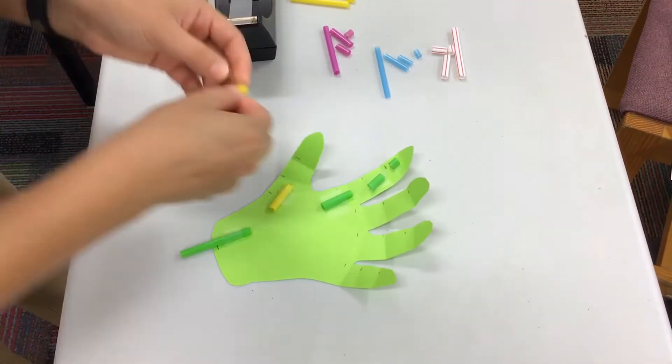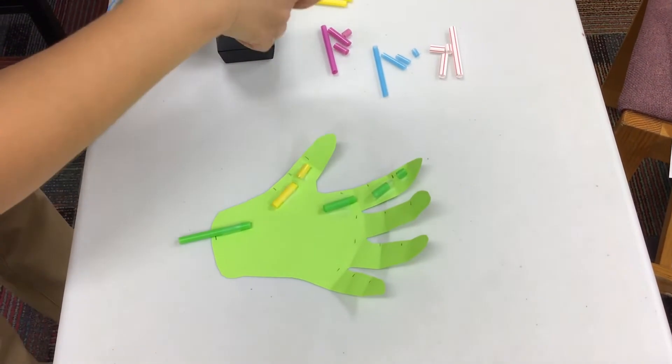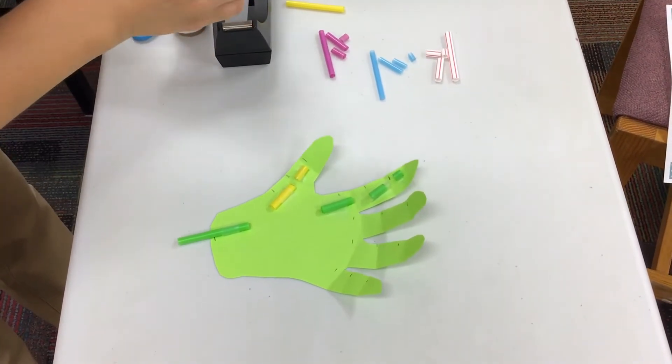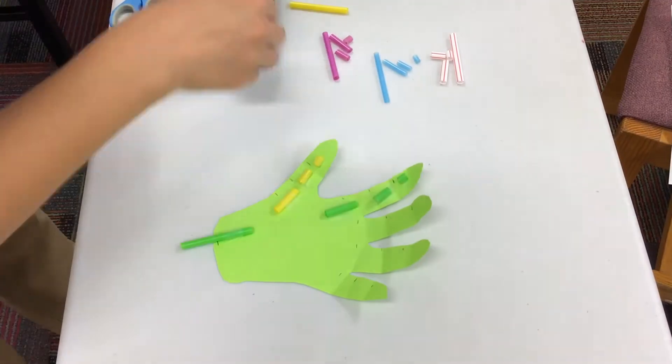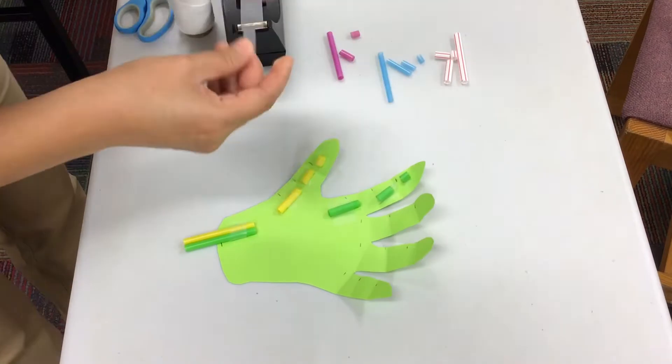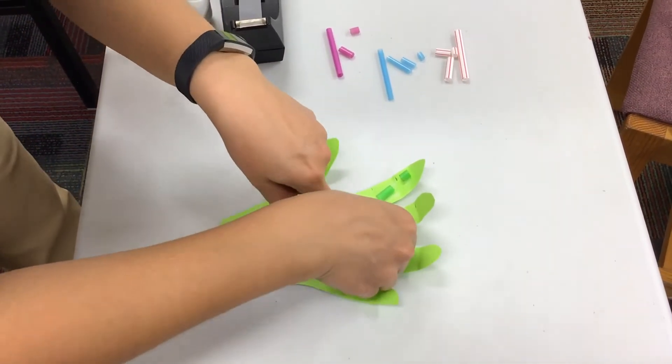The biggest straw piece will go at the wrist, the next biggest straw piece will go at the base, and then the two smaller ones will go at the top in between the joints so that we can move the fingers and the hand later.